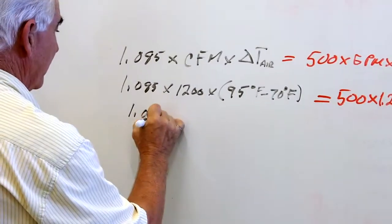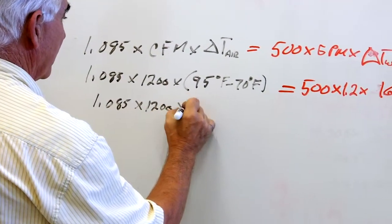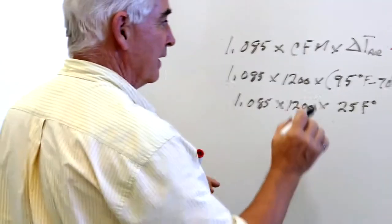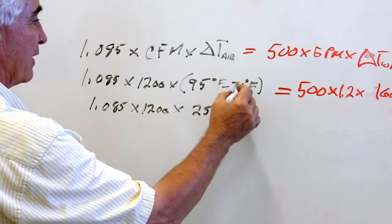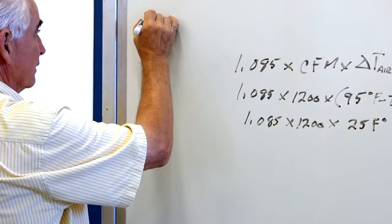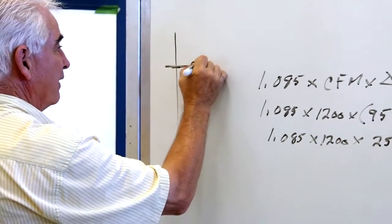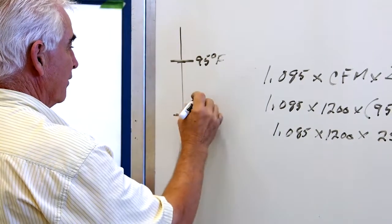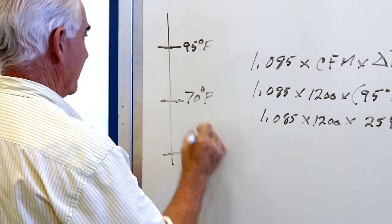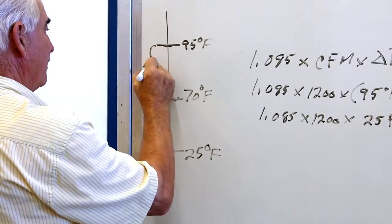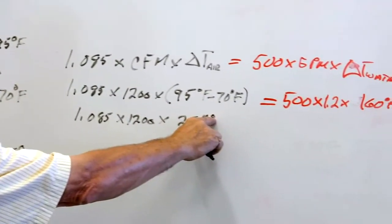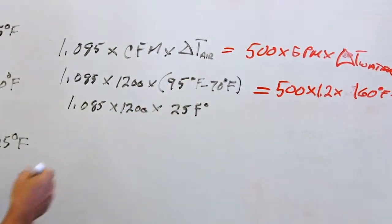We can simplify: 1.085 times 1200 times 25 Fahrenheit degrees. Note the difference — 95 degrees Fahrenheit minus 70 degrees Fahrenheit is 25 Fahrenheit degrees. Looking at a thermometer, 95°F is here and 70°F is here — that difference is 25 Fahrenheit degrees. When expressing a temperature difference, the degree symbol follows Fahrenheit; when expressing a measured temperature, it comes before.